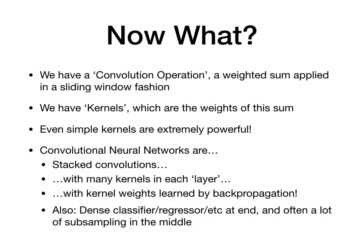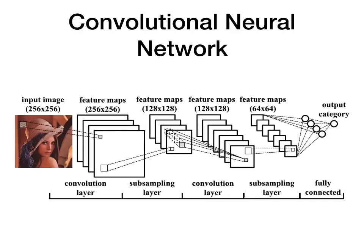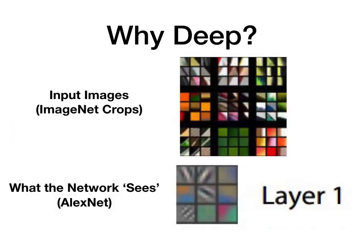We have this convolution operation, and we've seen how powerful even very simple convolutions can be. They're based on these kernels, which are just weighted sums slid over an input space. We can create neural networks out of them — these are called convolutional neural networks. What they are is a bunch of stacked convolutions with a bunch of kernels used in each layer, and those kernel weights are going to be learned by backpropagation. In an actual architectural format: we have an image, we slide a kernel over it to get an output layer, and then over that we slide a separate set of kernels to get another set of output images, and we repeat this process over and over. Why do we want to make networks deep like this, given that a single convolutional kernel is already quite powerful?